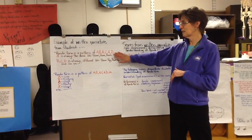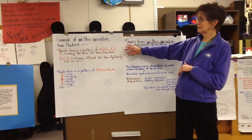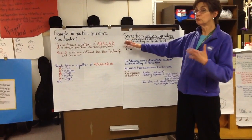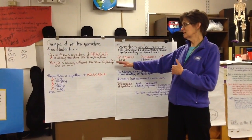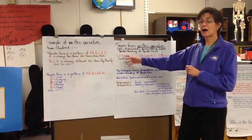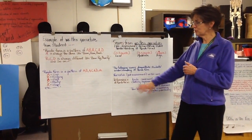Some narratives were written like this: 'Rondo form is a pattern of A, B, A, C, A, D. A is always the same, like boom boom boom. B, C, D is always different, like boom pop boom pop, and so on.' That's one student's example.